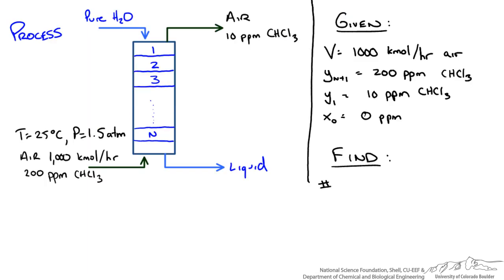We are asked to determine the number of stages for this column. So the question now becomes is this something we could solve. We could use a degree of freedom analysis and for a single section counter current cascade our degrees of freedom would be equivalent to the following, where n is our number of stages and c is our number of species.